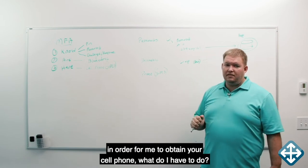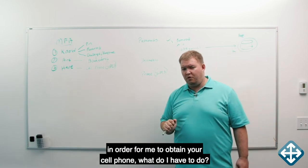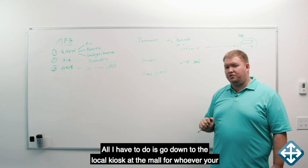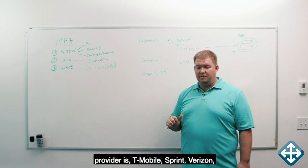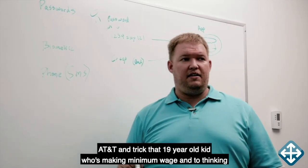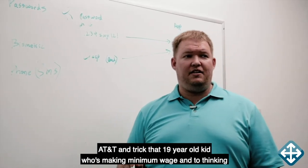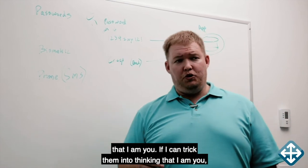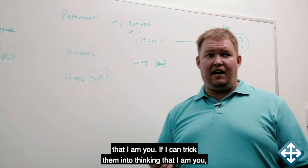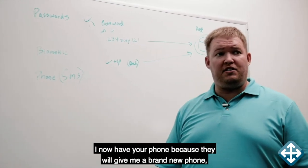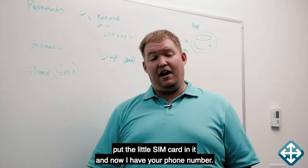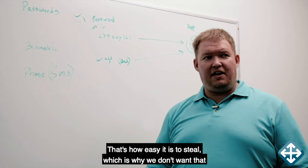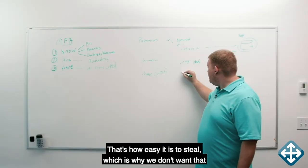In order for me to obtain your cell phone, what do I have to do? All I have to do is go down to the local kiosk at the mall for whoever your provider is, T-Mobile, Sprint, Verizon, AT&T, and trick that 19-year-old kid who's making minimum wage into thinking that I am you. If I can trick them into thinking that I am you, I now have your phone because they will give me a brand new phone, put a little SIM card in it, and now I have your phone number. That's how easy it is to steal which is why we don't want that.